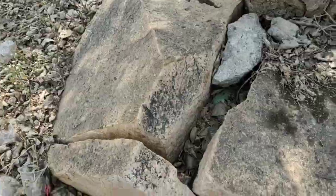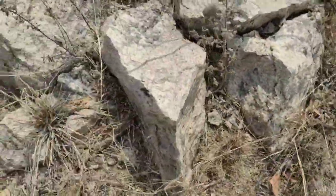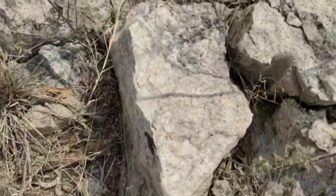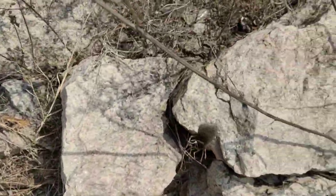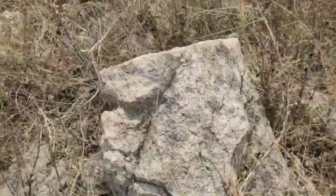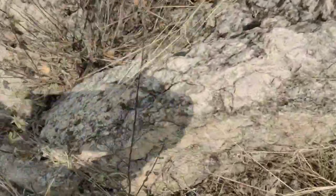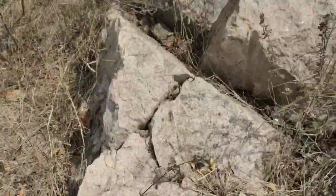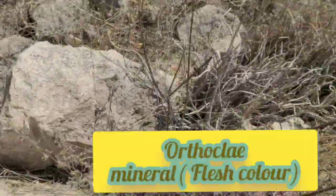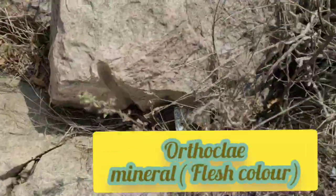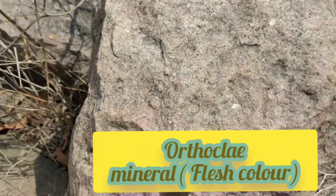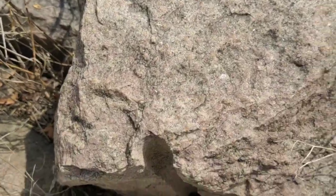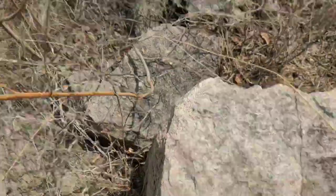These joints are developed where feldspar, orthoclase, and quartz minerals are present. This is orthoclase — it is flesh-colored. The mineral is called orthoclase.